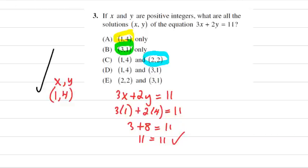Now let's try 3, 1. That's 3 times 3 plus 2 times 1 should equal 11. 3 times 3 is 9. 2 times 1 is 2. 9 plus 2 is 11, which equals 11. And it works out also. So 3 comma 1 is also one of the solutions.